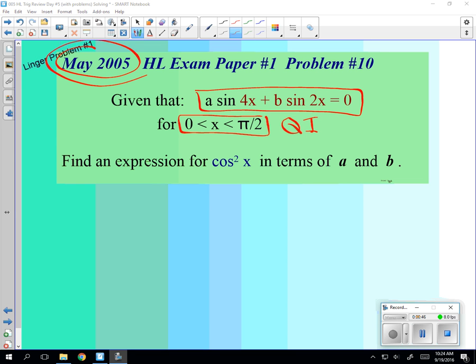Oh, okay. So you have a sin 4x equal negative b sin 2x. Love it. And what did you do?